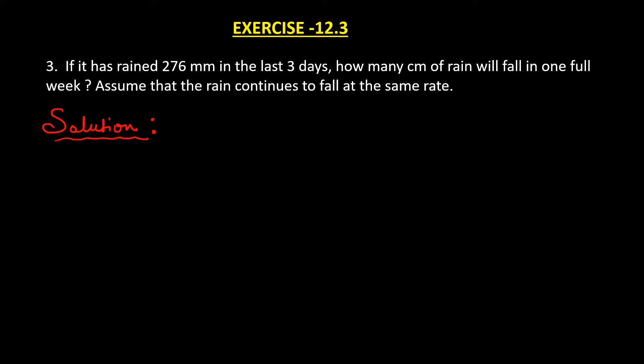According to question number three: if it has rained 276 mm in the last three days, how many cm of rain will fall in one full week? Assume that the rain continues to fall at the same rate. In unitary method, we first find the value for one unit, so we will find the rainfall for one day, then for seven days.